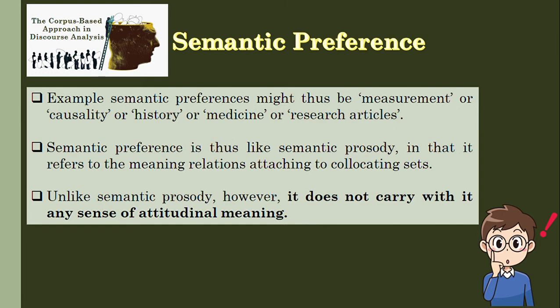To reiterate: when dealing with corpus-based approach in analyzing the semantic preference of a corpus, you need to look at a particular set which may include synonyms, meronyms, and antonyms. Through that, you may be able to identify the semantic preference.